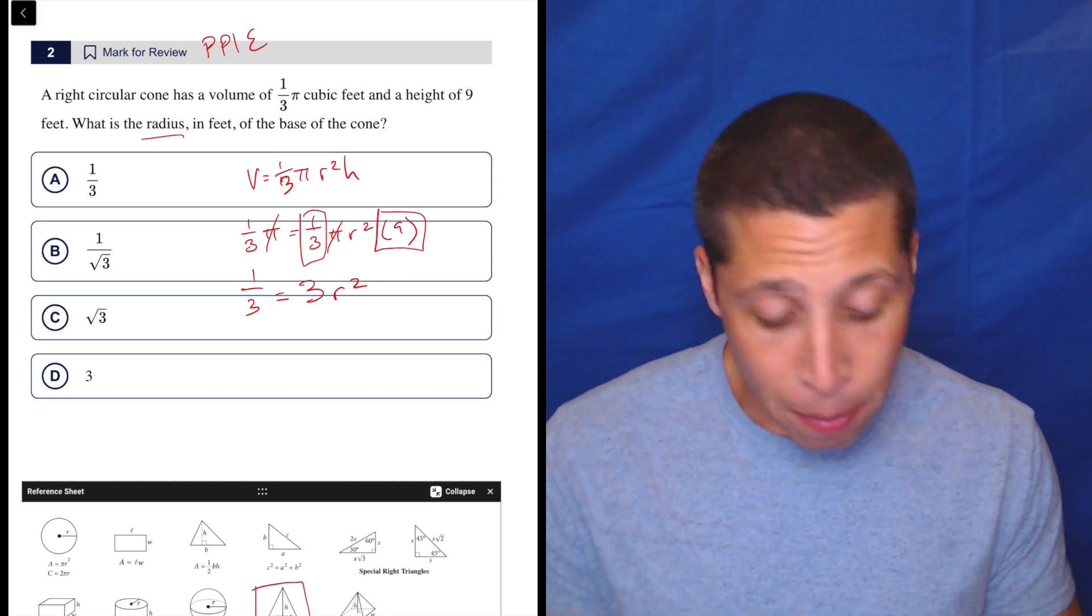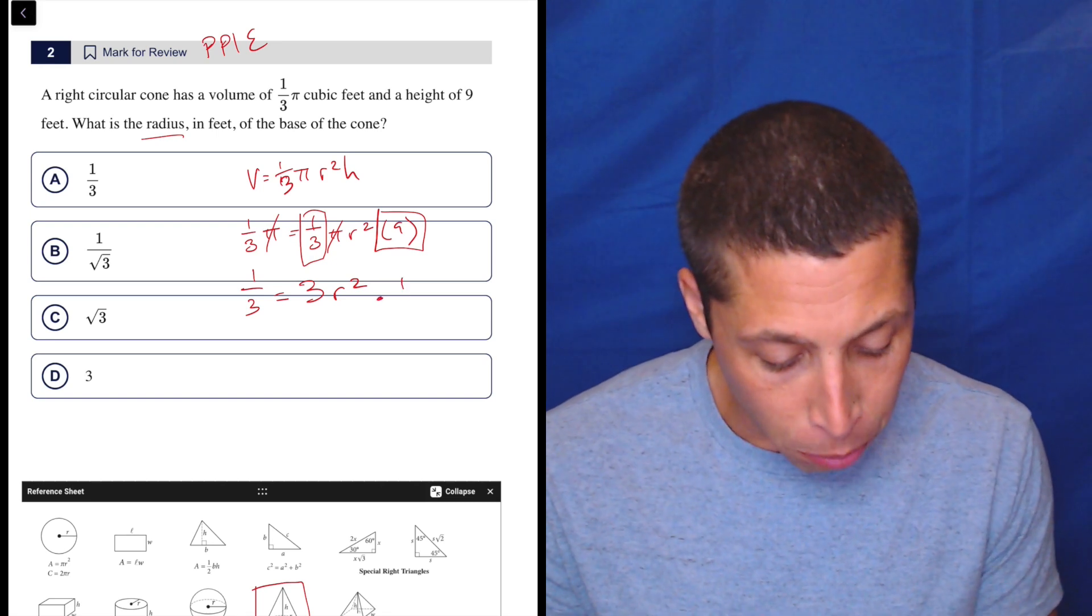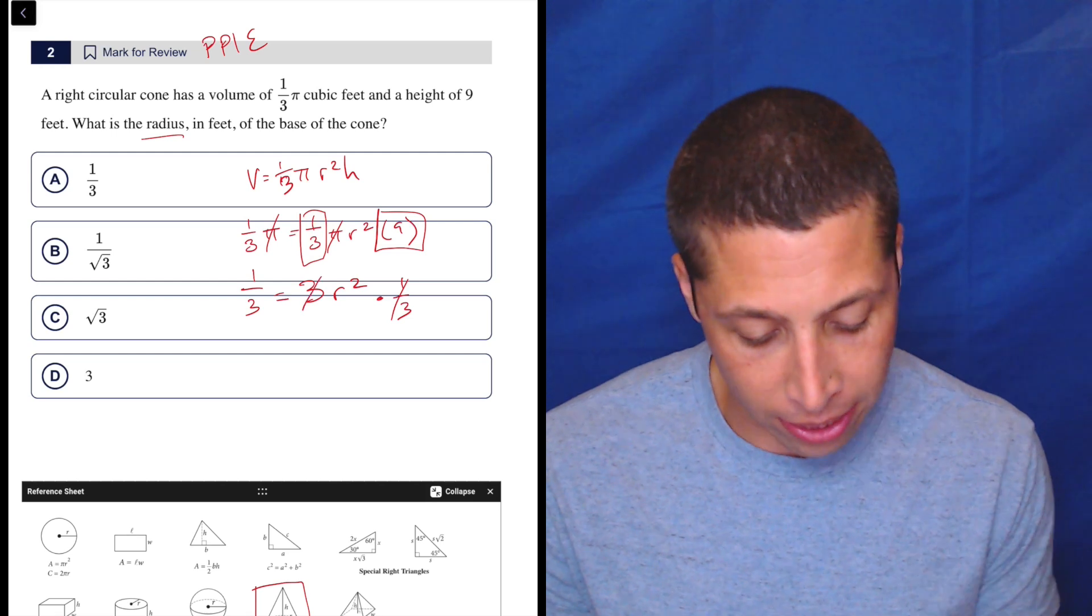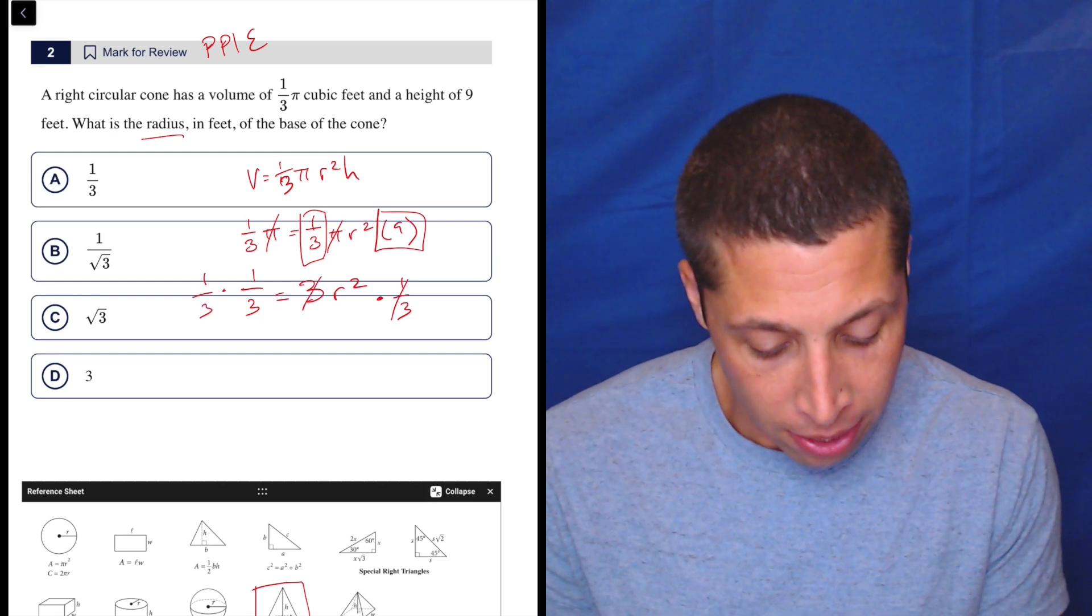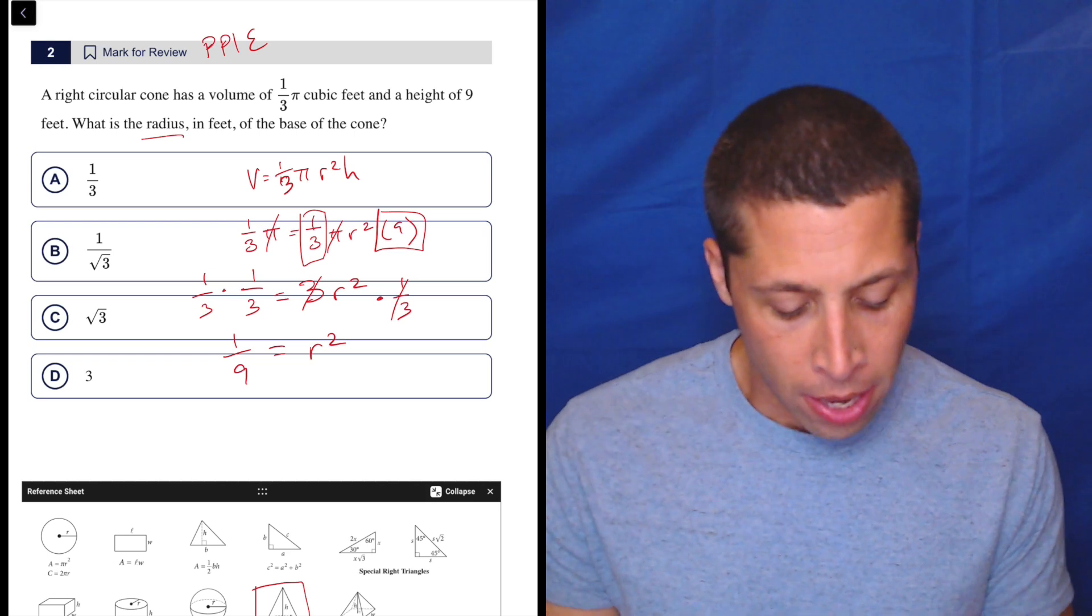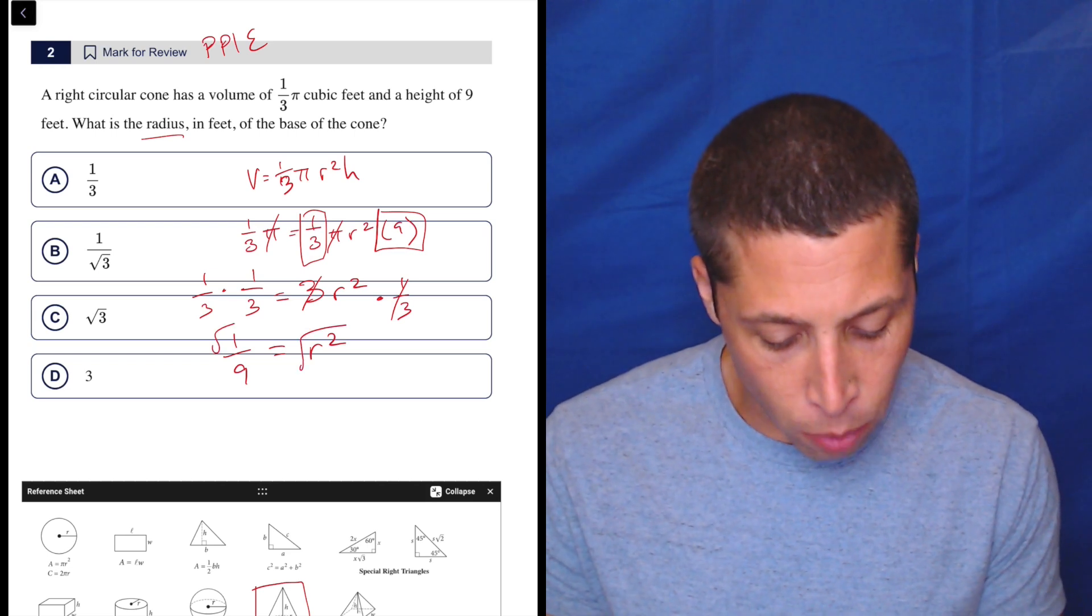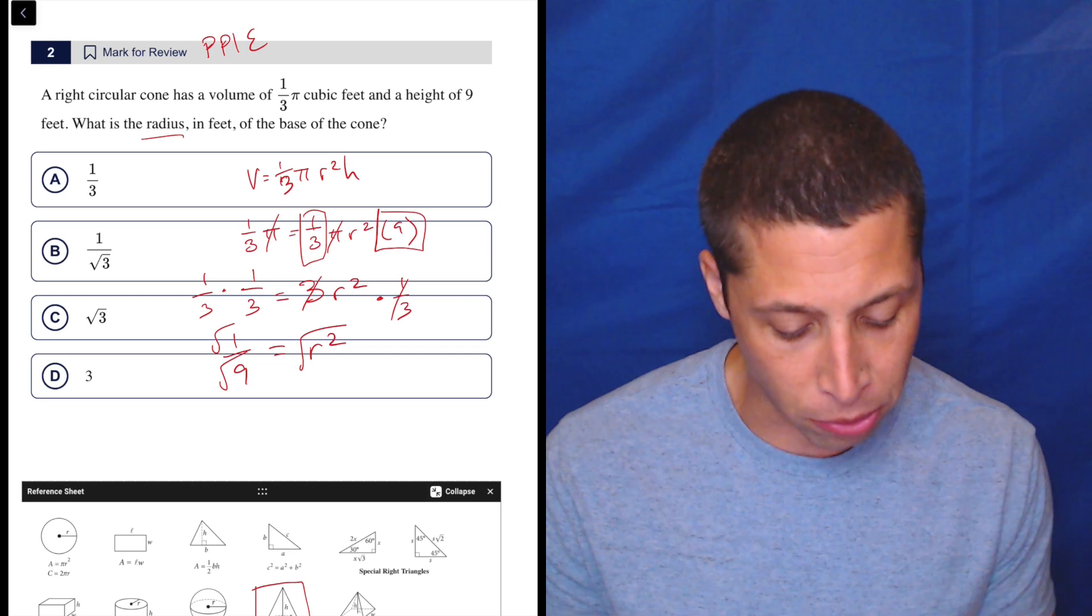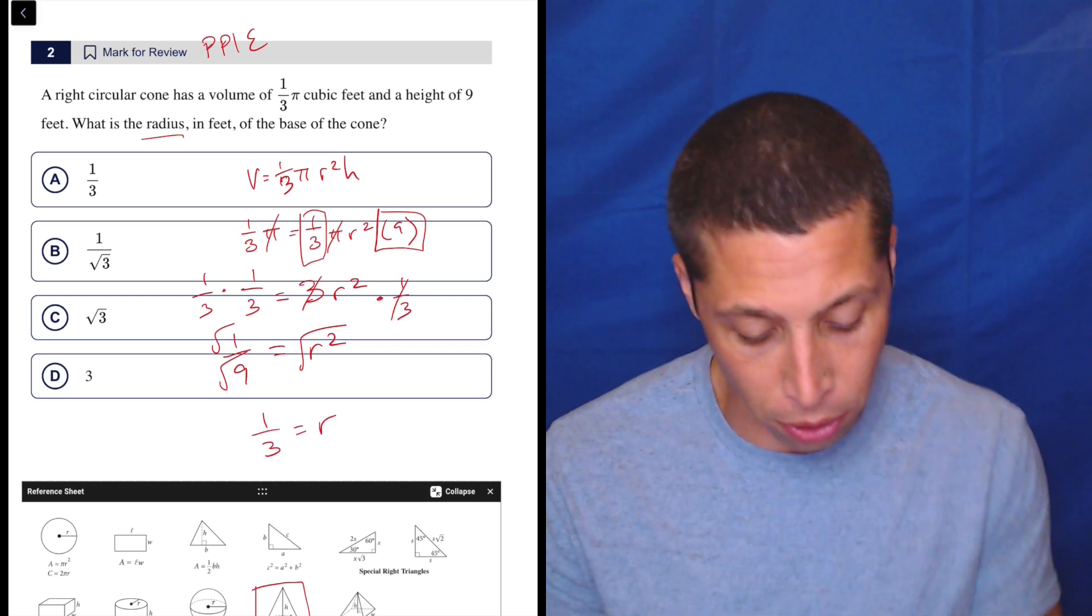Now I'm going to divide by three, which is the same as multiplying by one third. So if I multiply this side by one third, that cancels out, that cancels out. And on this side, that's going to be one ninth is equal to r squared. Now at this point, I know how to take the square root of a fraction. It is just take the square root of the top, square root of the bottom. So it's nice for me. That means the radius is one third.